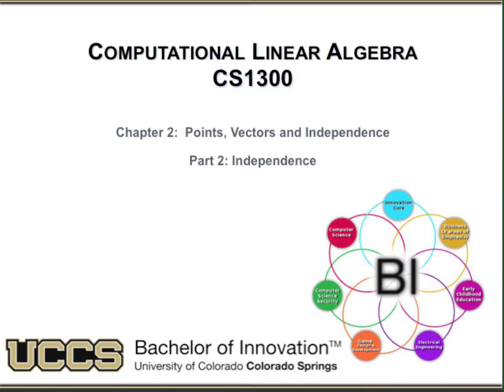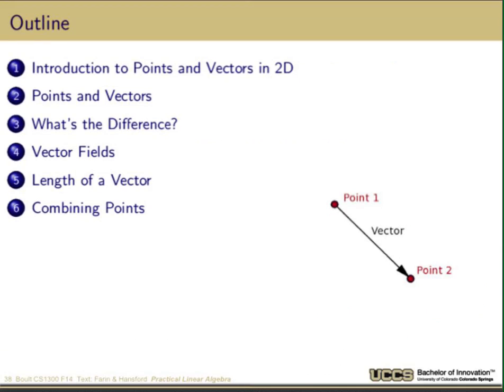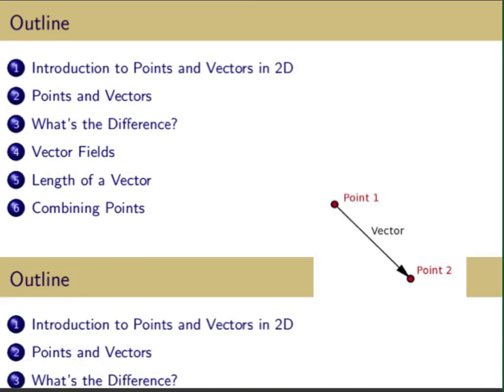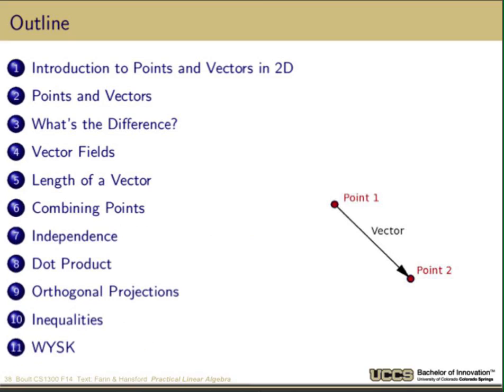Hi, and welcome back to Computational Learning Algorithm, Chapter 2: Points, Vectors, and Independence. We'll be talking about the second part of the chapter. In the last video, we looked at points, vectors, the difference, vector fields, length of vectors, and combining points. Now we're going to look at the more advanced topics of independence, dot products, orthogonal projections, and a bunch of inequalities.